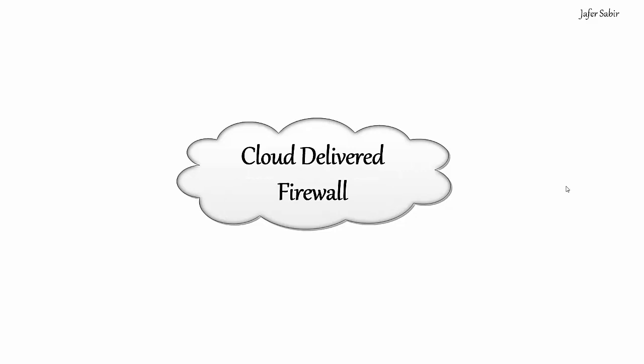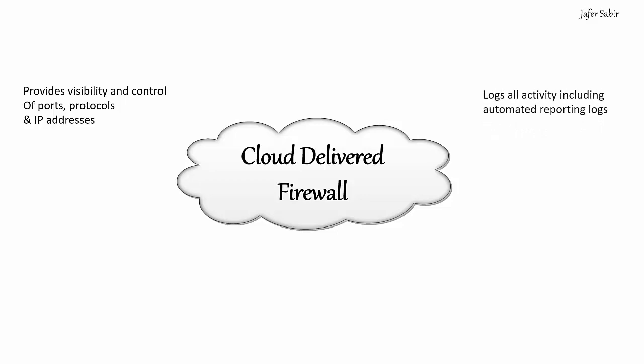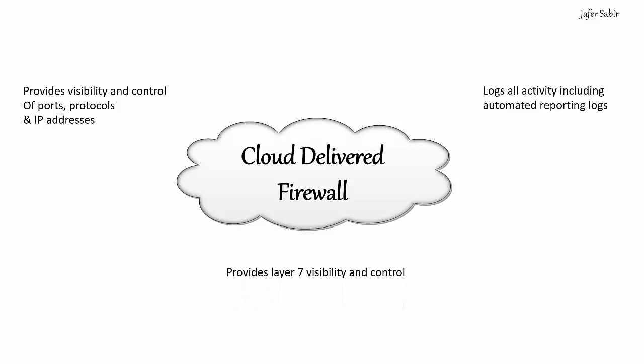Moving on to Cloud Delivered Firewall. The cloud delivered firewall works like a traditional firewall with customizable policy enforcement and the blocking of protocols, ports, and IP addresses. It also provides logs and reports. Additionally, it is a Layer 7 firewall that provides Layer 7 application visibility and control using signature detection to recognize thousands of applications.